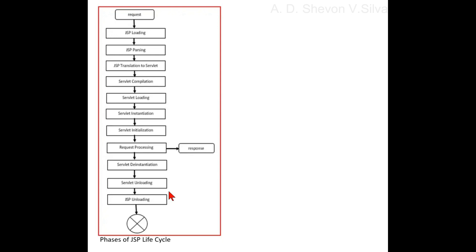The lifecycle flow is as follows: request connects to JSP loading, JSP loading to JSP parsing, JSP parsing to JSP translation to servlet, which connects to servlet compilation, then servlet loading, servlet loading to servlet instantiation, servlet instantiation to servlet initialization, servlet initialization to request processing, request processing to servlet de-instantiation, servlet de-instantiation to servlet unloading, and servlet unloading to JSP unloading.